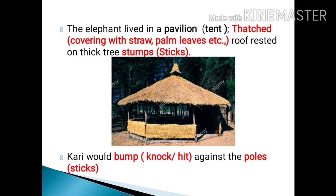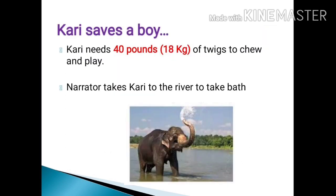The thatched roof would be kept resting on very thick stumps — stumps means sticks. Because every now and then Kari would bump, meaning hit, against the poles. If Kari damaged the sticks, the whole tent would collapse, so very thick stumps were used. In this story, we are going to see how Kari saves a boy, how Kari is naughty, and how Kari learns many lessons from Gopal.